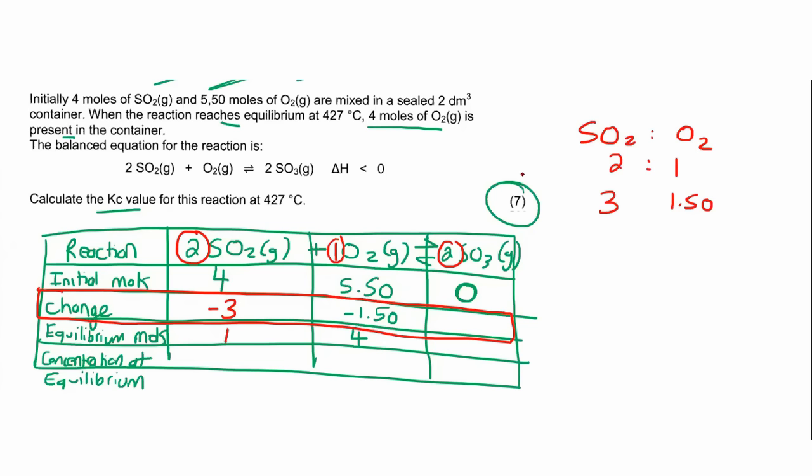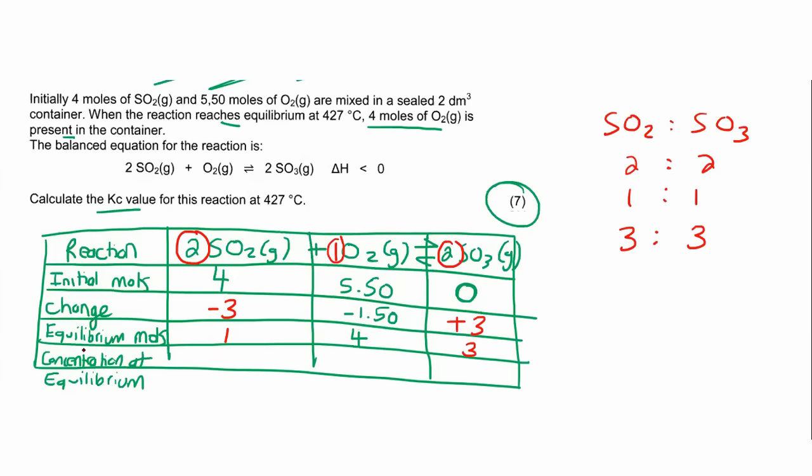And guys, you can do this however you like. You can look at the ratio of these two with each other, or you can look at the ratio of these two with each other. It doesn't matter. You get the same answer at the end of the day. So I'm going to look at SO2 and SO3. Their mole ratio is 2 to 2, which is the same as 1 to 1. And so if I know that SO2 is 3, then it means that the SO3 must also be 3. So this will be a plus. The reason it's a plus is because it becomes more because it is a product.